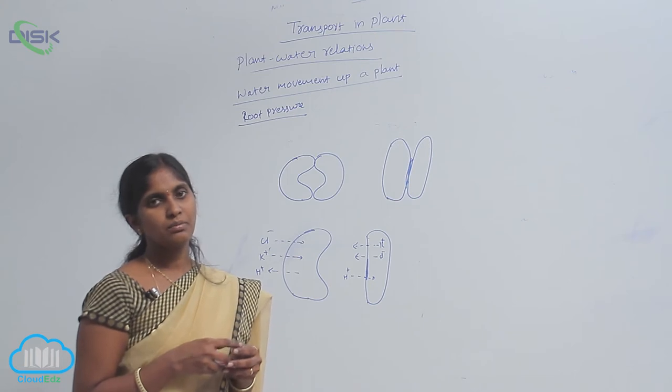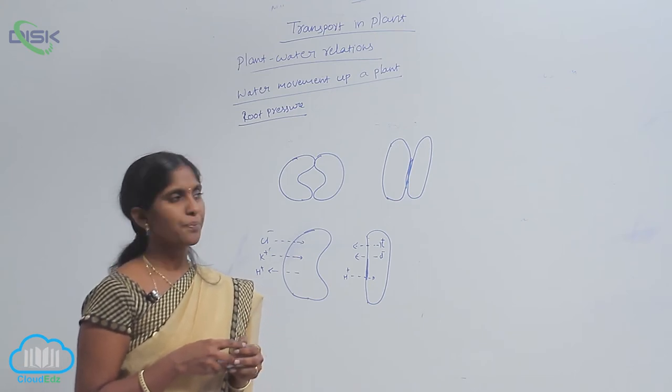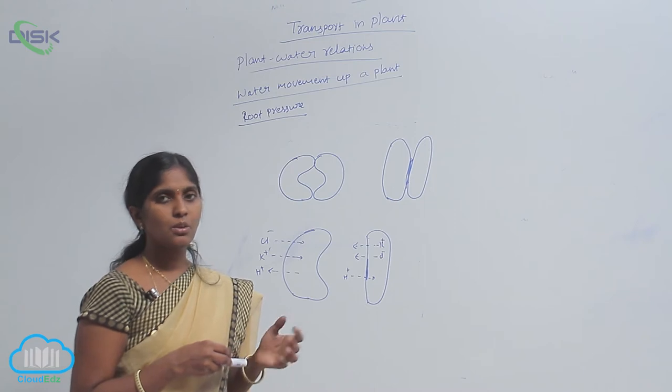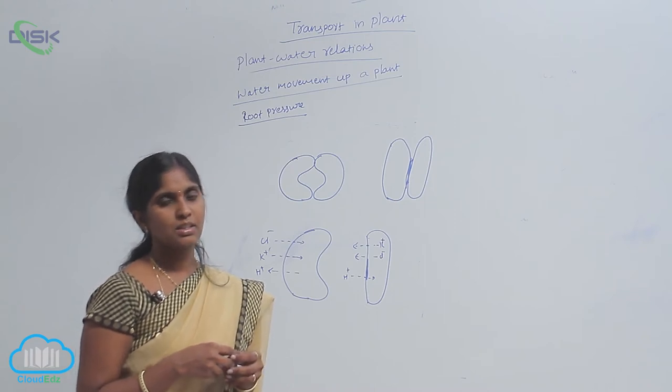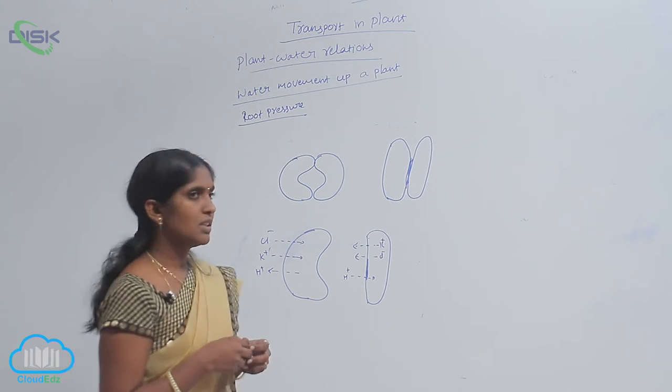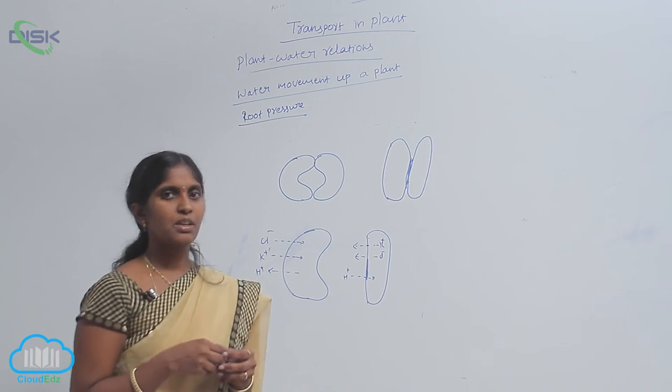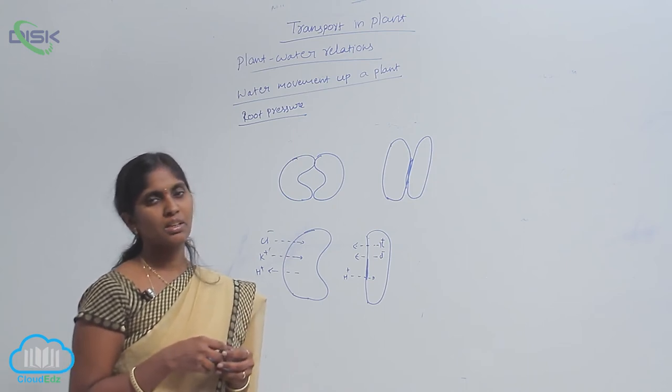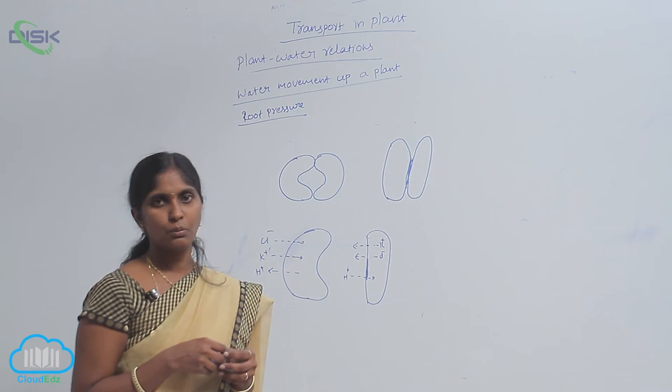Besides the guard cells, there are subsidiary cells. Based on the orientation of subsidiary and guard cells, the stomata are divided into many types.